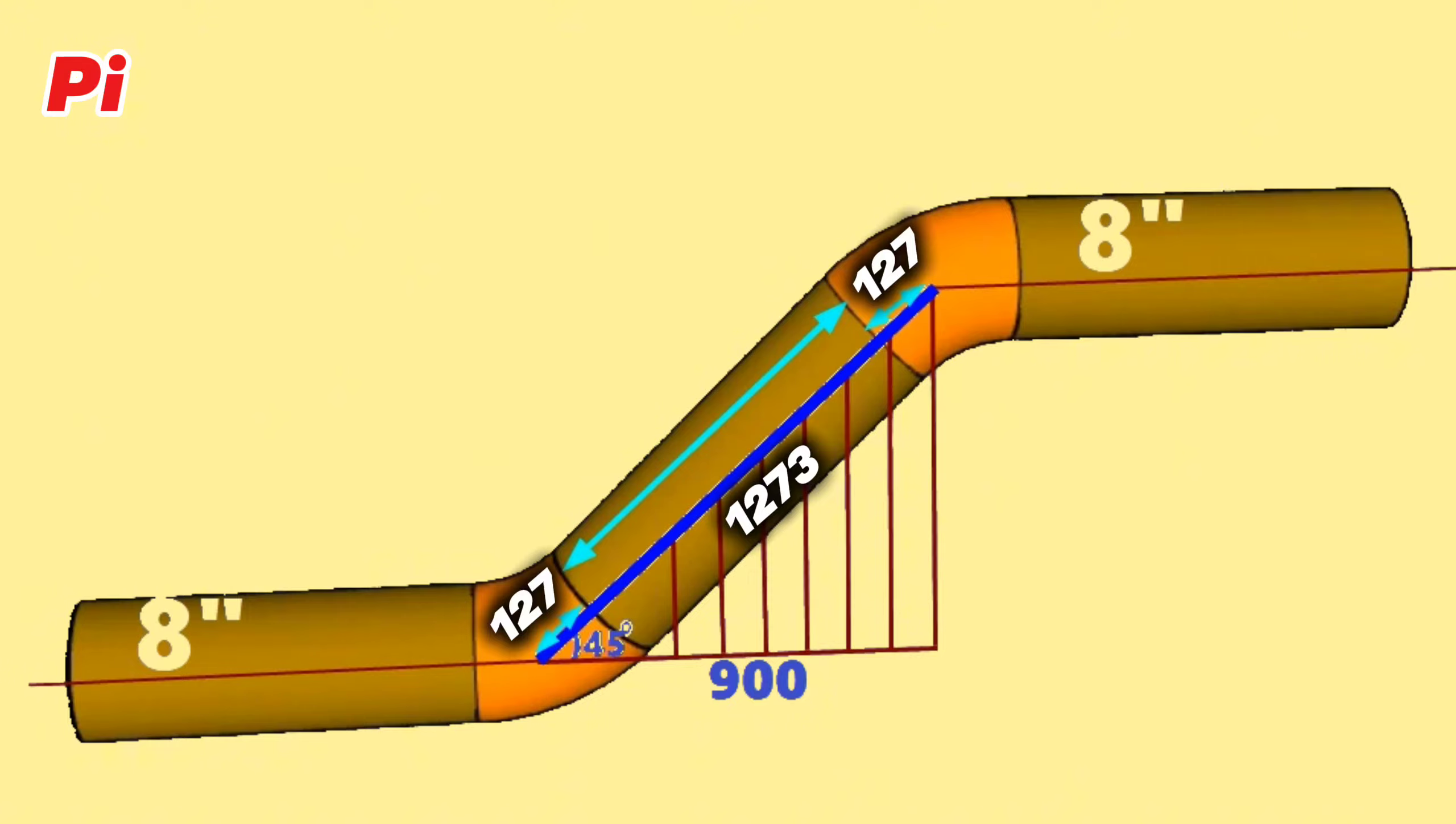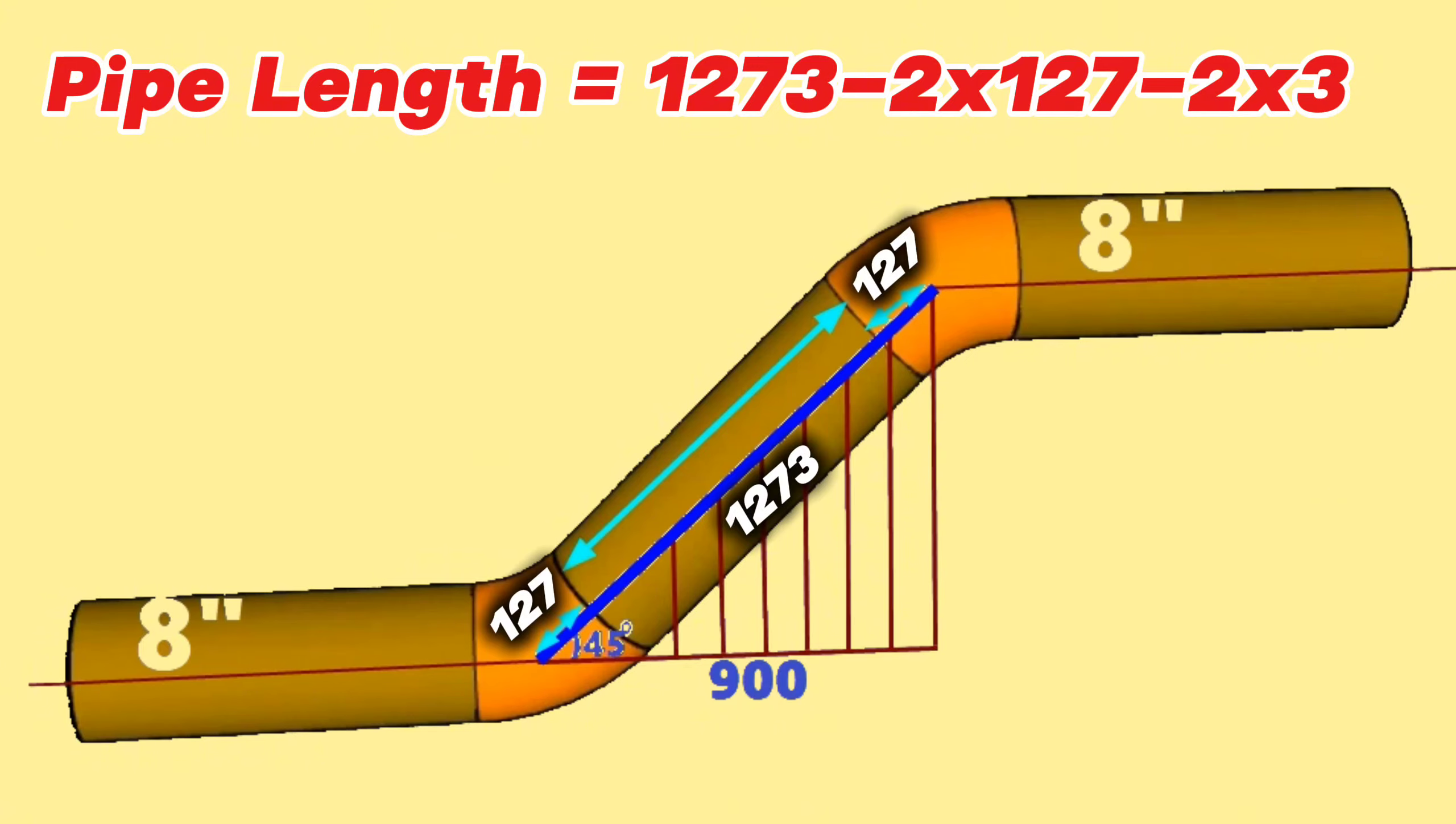Pipe length equals total length 1,273 millimeters, minus 2 times 8-inch 45-degree butt weld elbow dimension 127 millimeters, minus 2 times gaps for welding 3 millimeters. At last, we calculate and found the length of the pipe piece on this 8-inch pipeline is 1,019 millimeters.